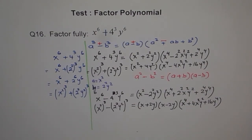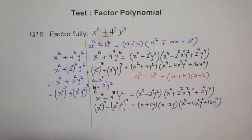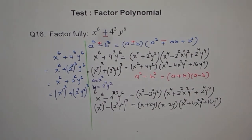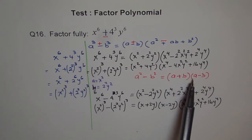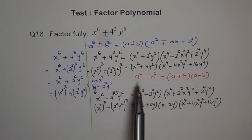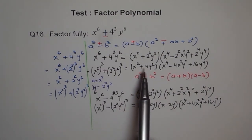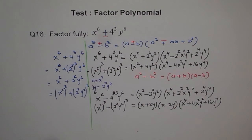So we solved two problems at the same time — one with plus and one with minus. The huge difference is that a square minus b square can be factored as a plus b times a minus b, but a square plus b square cannot be factored. So we had three factors in the minus case but only two in the plus case. I hope you understand — we will take some more cubic differences and squares next. Thank you.